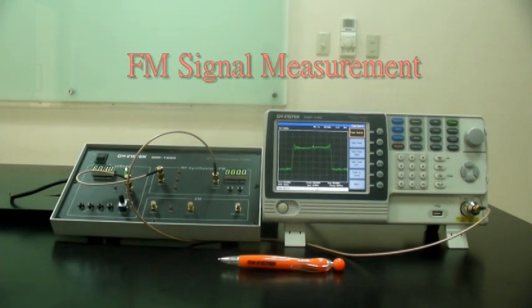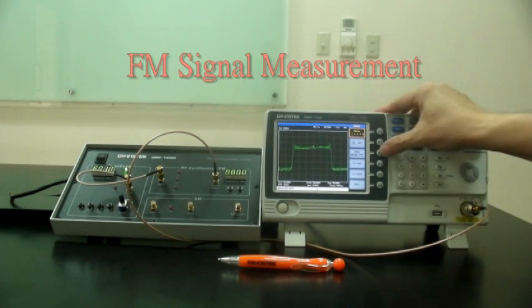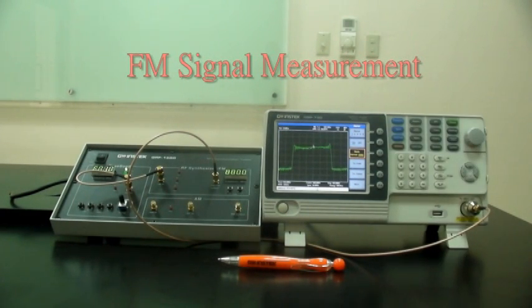Next, press marker F3 delta to measure frequency deviation.